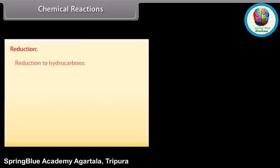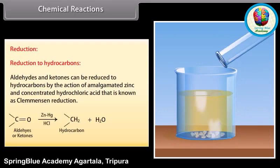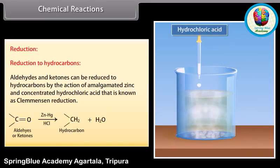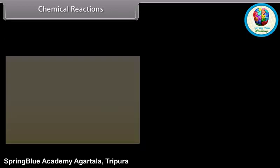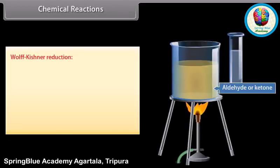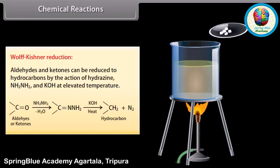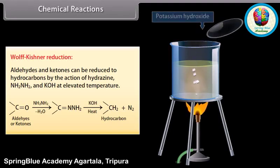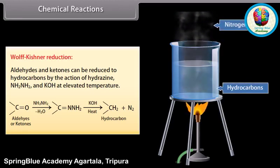Reduction to hydrocarbons: aldehydes and ketones can be reduced to hydrocarbons by the action of amalgamated zinc and concentrated hydrochloric acid, which is known as Clemmensen reduction. Wolff-Kishner reduction: aldehydes and ketones can also be reduced to hydrocarbons by the action of hydrazine and potassium hydroxide at elevated temperature.